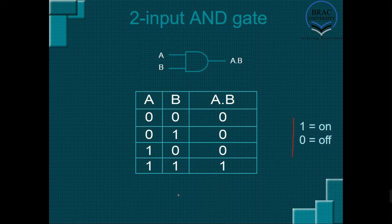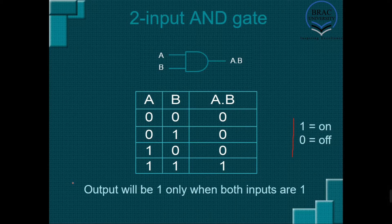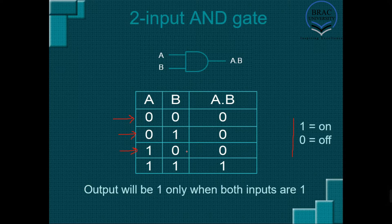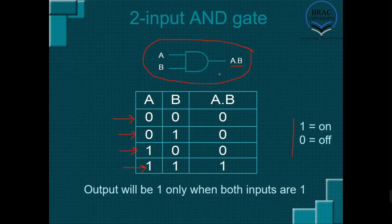The rule for a simple AND gate: output will be 1 only when both inputs are 1. At the first row both inputs are 0, so output is 0. At the second row one input is 0 and the other is 1, so output is 0 again, because output can only be 1 when both inputs are 1. At the third row one input is 1 and the other is 0, so output is 0. But at the final row both inputs are 1, so the output will be 1. This is the general figure for a two-input AND gate with inputs A and B and output A dot B.